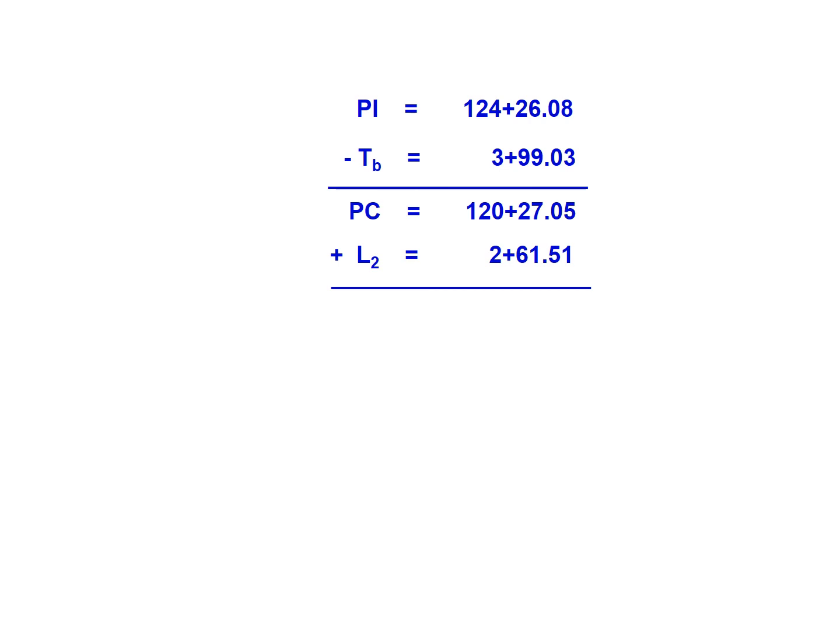We're going to add L2. L2 is that first curve—the existing curve has the nomenclature of 2 although it does come first—with a length of 2 plus 61.51, which will give us a point of compound curvature, the PCC, with a station of 122 plus 88.56.